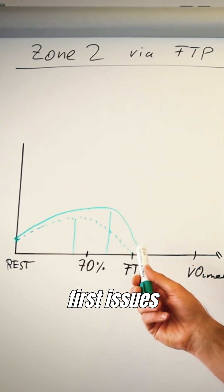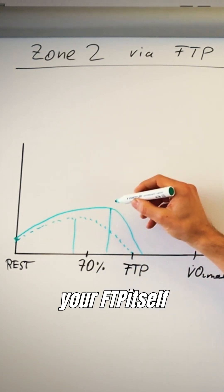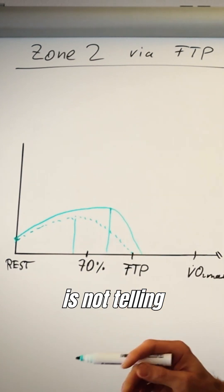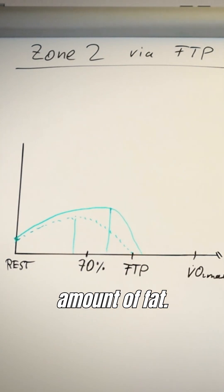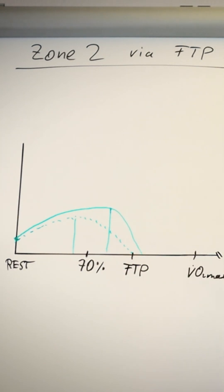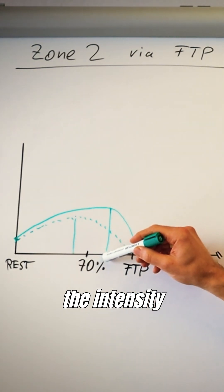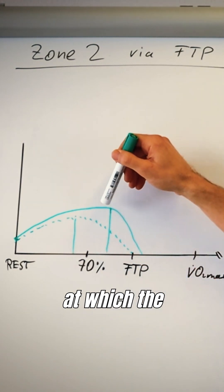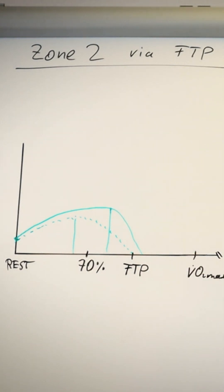The first issue you see is that your FTP itself is not telling you at which percentage you burn the most amount of fat. Science has proven that training at fat max — the intensity at which the fat combustion rate is highest — helps decrease body fat.